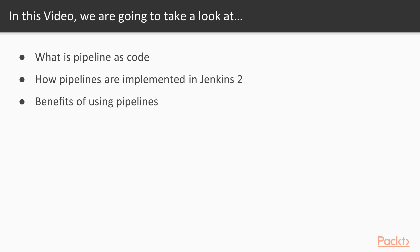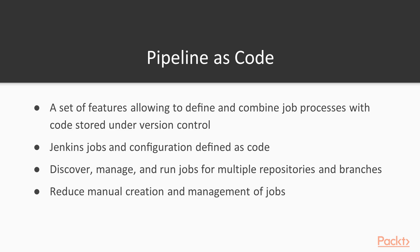Let's start with the concept of pipeline as code. When we talk about pipeline as code, we refer to a set of features which allow to define and combine job processes using code and to store this code under version control. In other words, Jenkins jobs and their configurations are defined as code instead of manual configuration via the Jenkins graphical user interface. This is particularly useful when the same job must be applied to multiple branches in Git or to multiple source repositories.